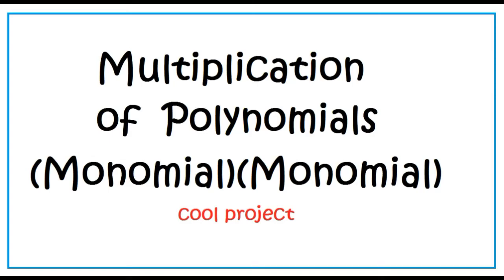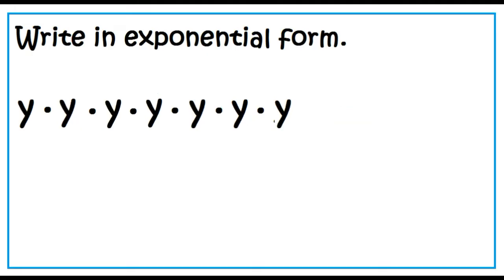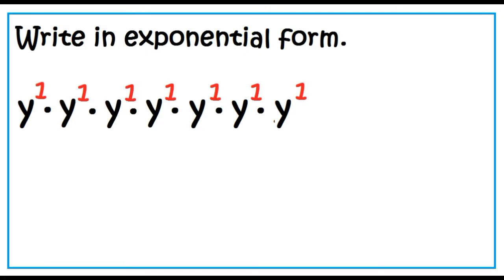Monomial times monomial. What is 2 times 2 times 2 times 2 times 2 times 2 times 2 times 2 in exponential form? 2 to the power of 7. How about y times y times y times y times y times y times y? y to the power of 7. Remember that a variable is understood to have 1 as exponent. To get 7, just add 1 plus 1 plus 1 plus 1 plus 1 plus 1 plus 1.